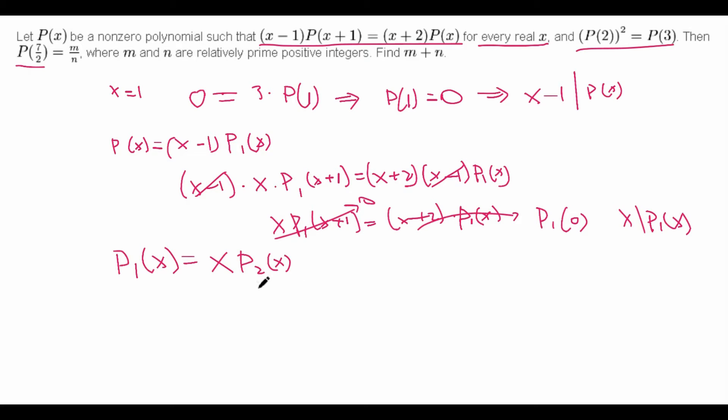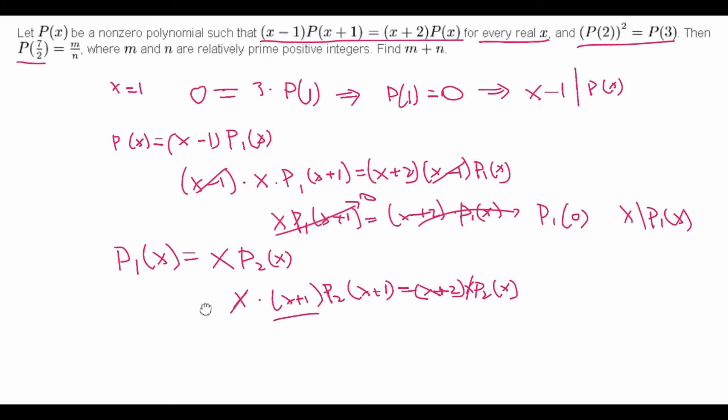So now, again, we can plug this in to get x times (x+1) times P₂(x+1). What does this equal? This equals (x+2) times P₂(x) times x. And now the x's cancel out. And now we're even closer. Now we have an x+1 term instead of an x term. And we see that this term right here is gradually going towards x+2. So let's keep on going and see what happens when we actually get there.